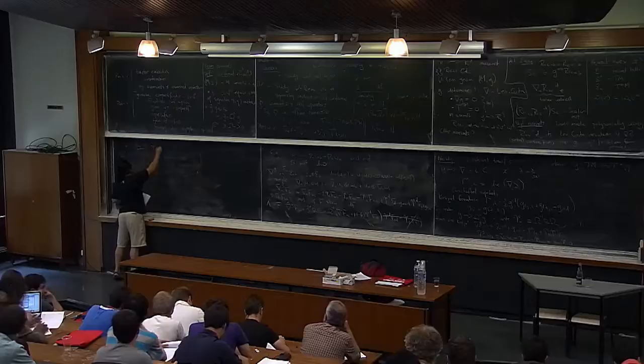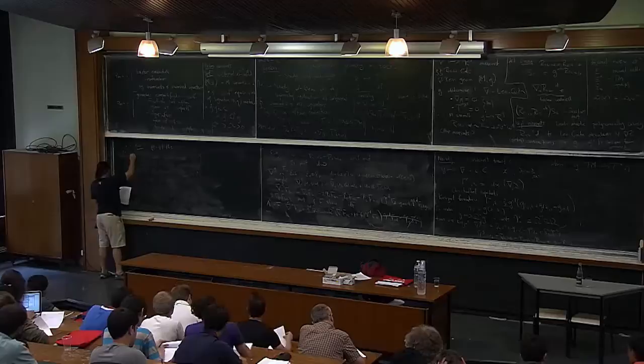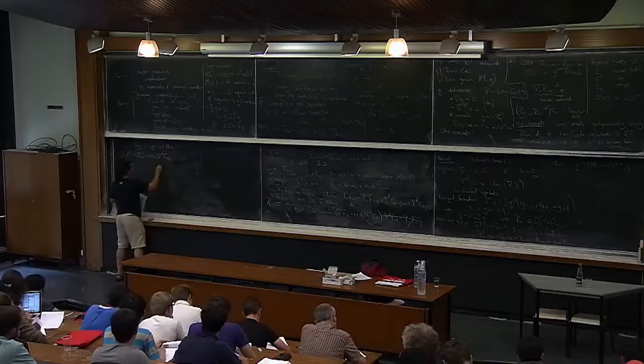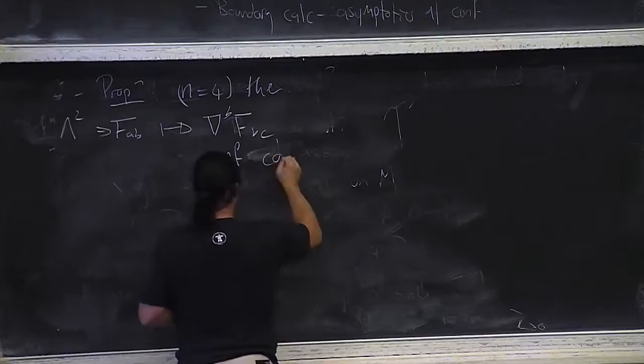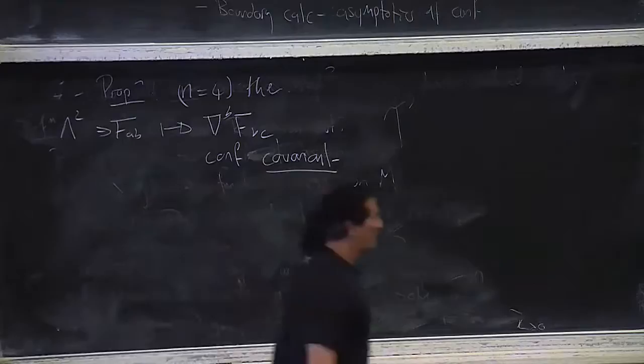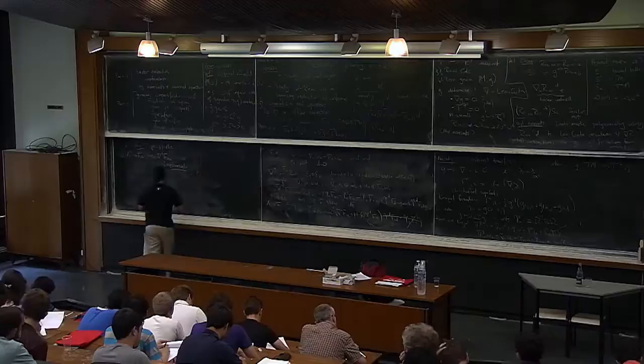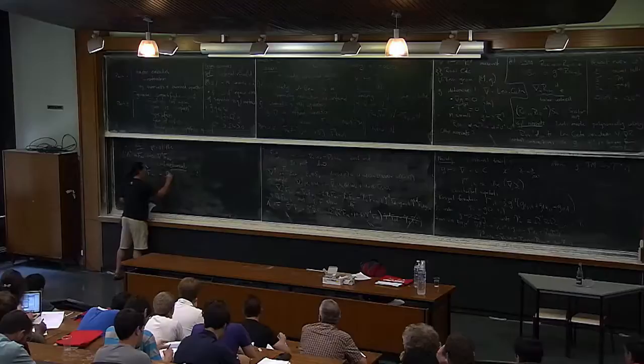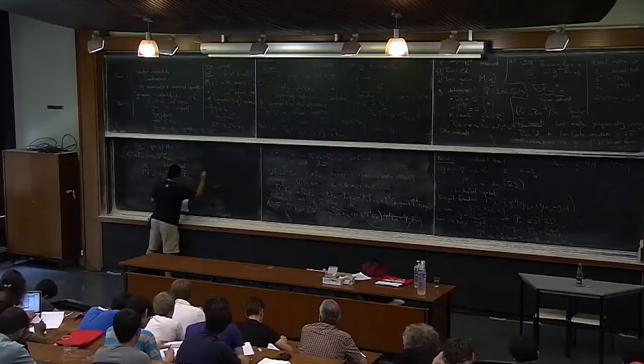Let's celebrate — we'll call it a proposition. If N equals 4, then for F_{AB} a two-form, this operator ∇^B F_{BC} is conformally covariant. In fact, it's conformally covariant: when we hat this thing under a conformal transformation, we get omega to the minus two times ∇^B F_{BC}.